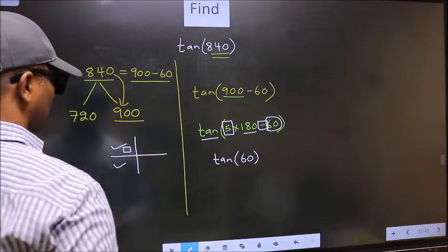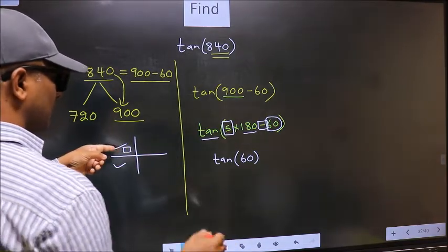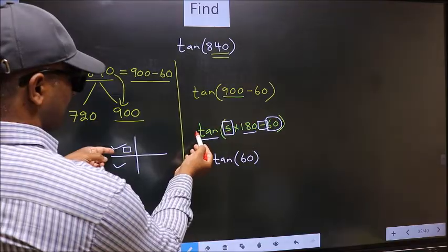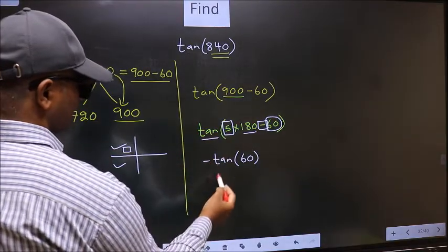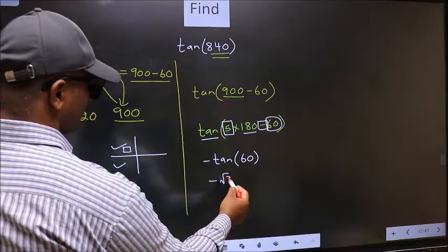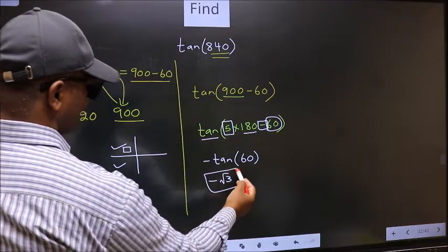And in the second quadrant, tan is negative. So we should put negative. So negative tan 60 is root 3. This is our answer.